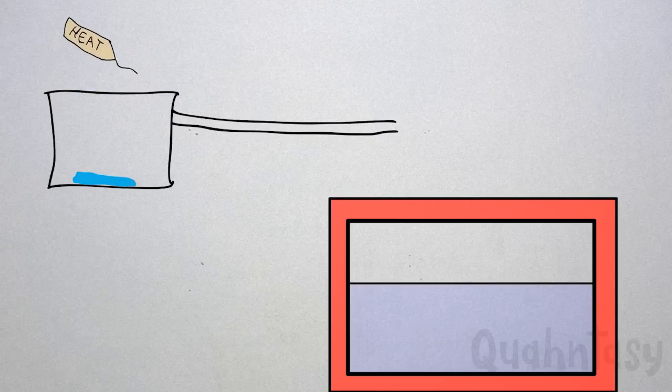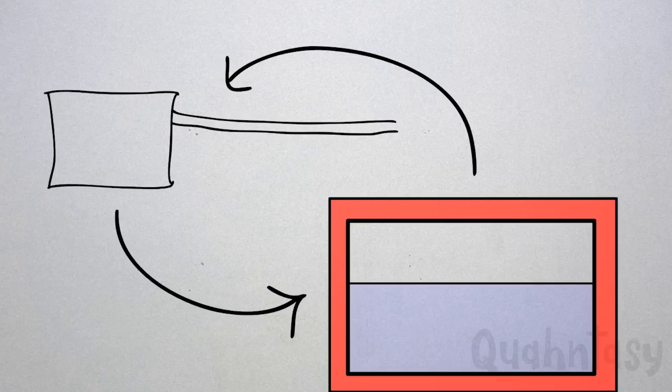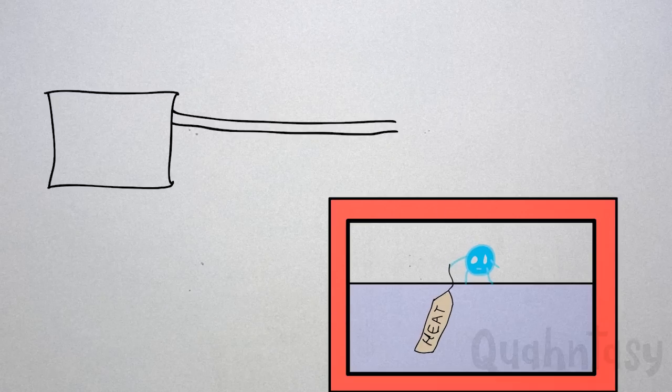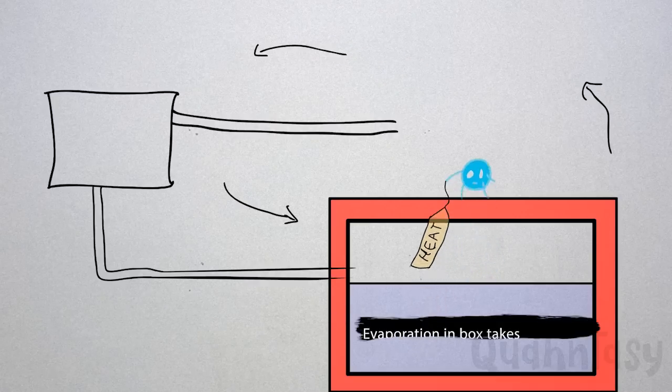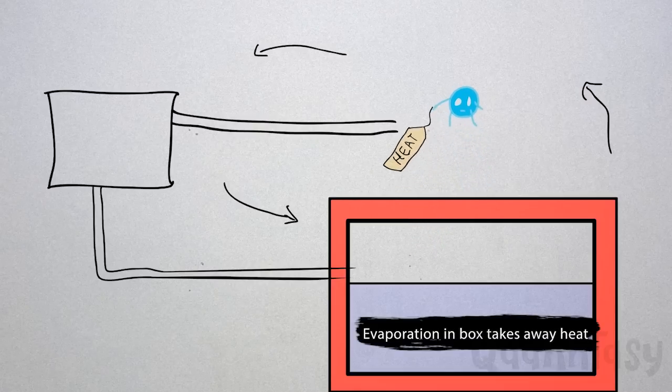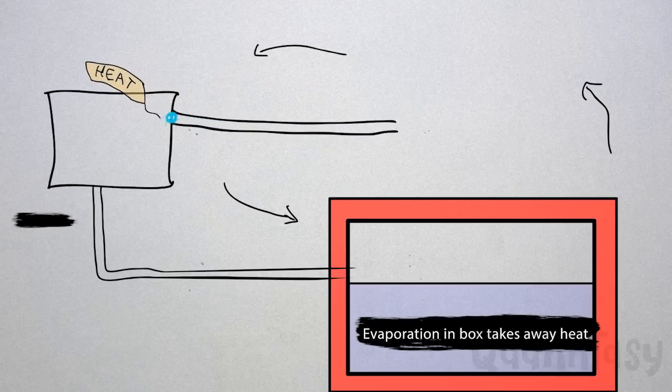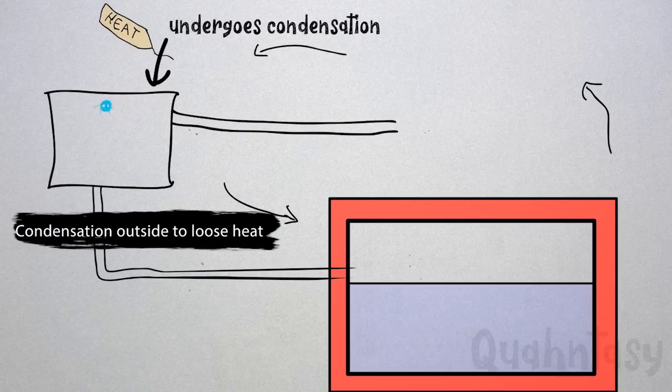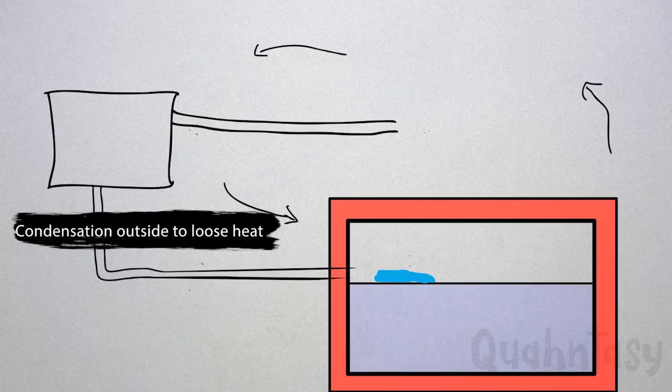And voila, we have our refrigeration system. Not quite yet, we need a cycle that repeats itself. The most obvious one will be to connect them in such a way that stuff gets evaporated from the box taking away heat, undergoes condensation outside to lose heat, and then funnels down again for evaporation.